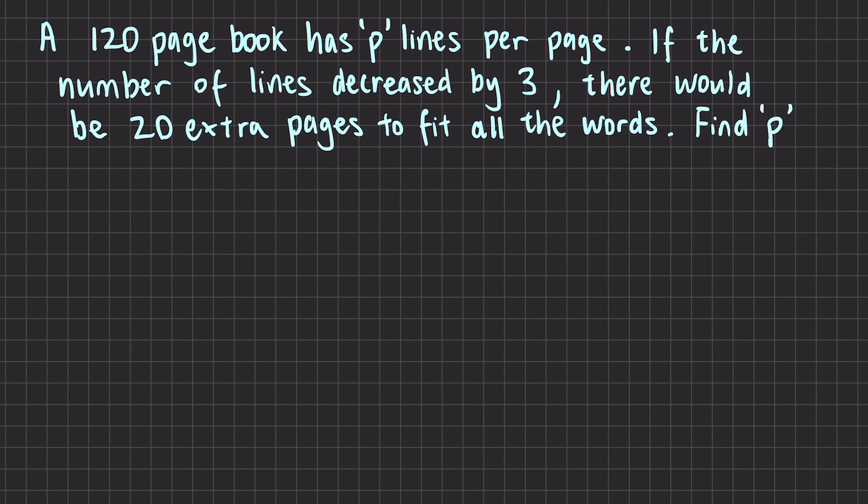Let's look at this question. I like to write out exactly what I'm doing for each step. That way, when I look at this in the future, I will know exactly what my thought process was at that time. So in this question, I have a 120 page book that has a certain number of lines per page, and this is our variable P. And now if we decrease the number of lines per page, so if we decrease P by three, we end up with 20 extra pages to fit everything. And we're asked to find what P is equal to.